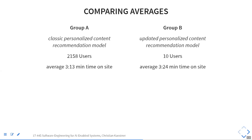A classic result might look like this: Group A has a classic recommendation model, Group B has a personalized new model. With 2,000 users, 10 get the new version. You look at how much time people are spending on your site and see Group A spent maybe 3 minutes 13 and with the new model you see 3 minutes 24. It can be very hard to tell if this difference is due to the change.